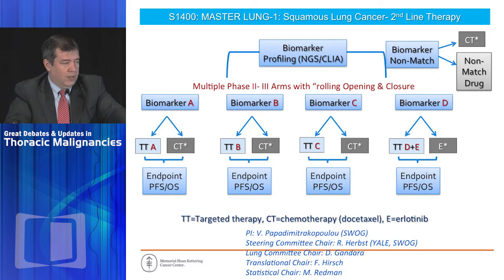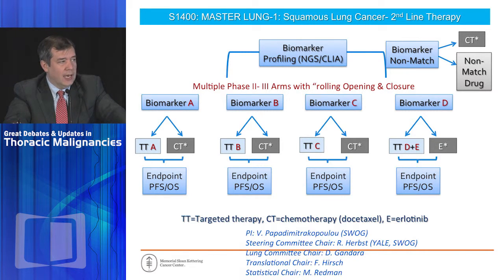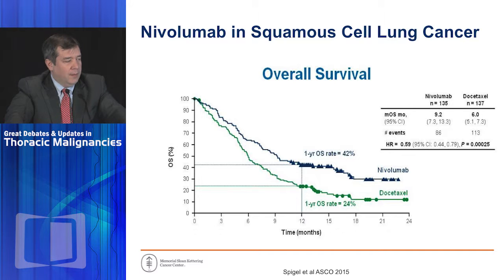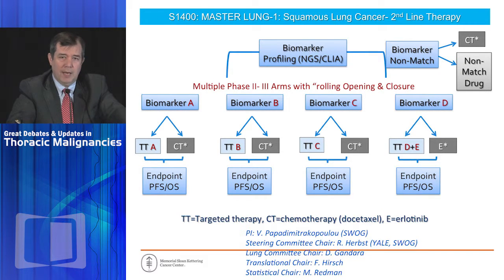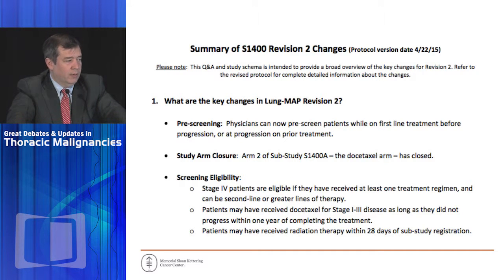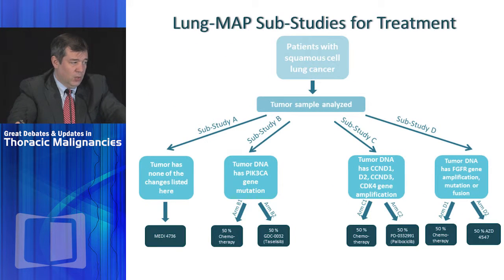This was the Lung MAP master protocol trial designed for squamous cell lung cancer. Then data came out in March showing that in patients with squamous cell lung cancer previously treated with platinum-based doublet, nivolumab is better than docetaxel. So a design randomizing patients to chemotherapy — docetaxel — doesn't make sense if that's inferior to nivolumab. That required a summary of revisions and changes, the first of likely many.